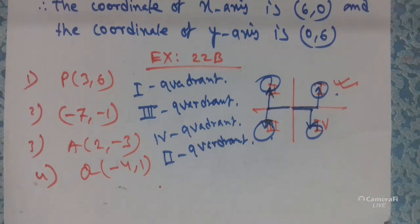Now I am going to discuss some problems from Exercise 22B. The first question asks: in which quadrant does the point P(3,6) lie? As you know, there are four quadrants. If both x and y values are positive, the point lies in the First Quadrant. Since both 3 and 6 are positive, it moves right and upward, so the answer is the First Quadrant.